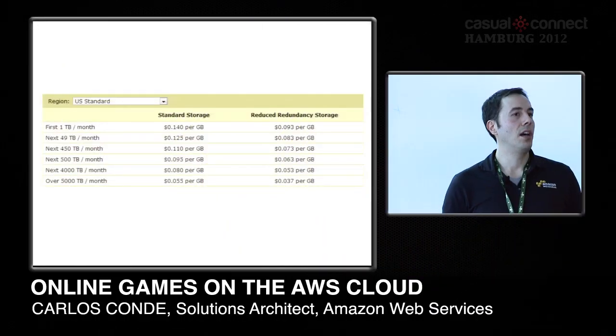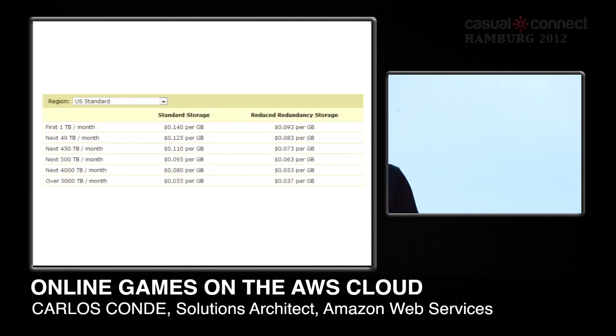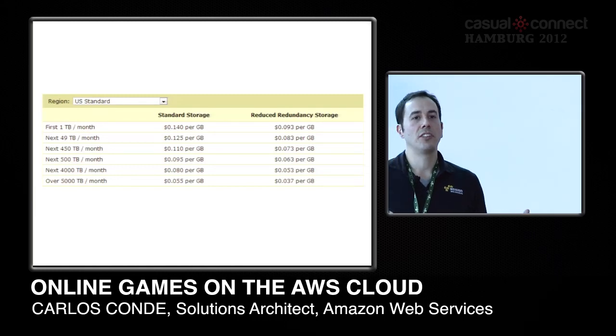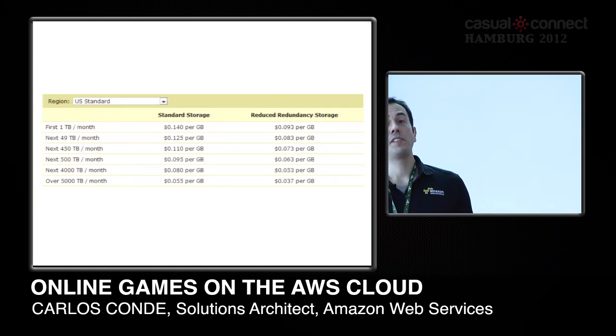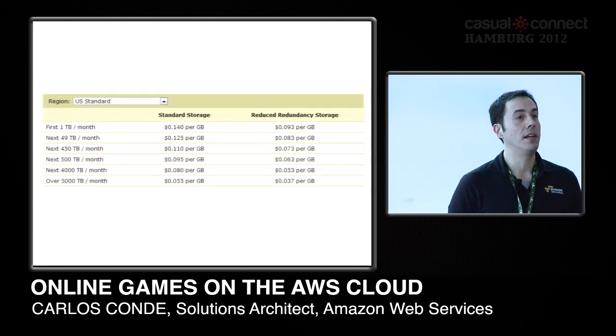Amazon S3 costs 14 cents per gigabyte per month. A Flash game is probably no more than 20 or 50 megabytes, so hosting a complete Flash game on Amazon S3 will not cost you much. S3 scales in huge proportions, which is especially interesting when you are distributing a game and you have millions of players who need to connect to download it.